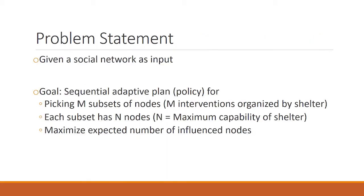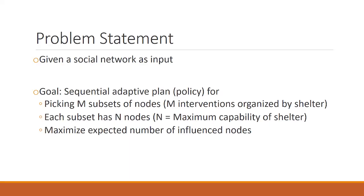Our problem statement is: given a social network as input, our goal is to come up with a sequential adaptive plan or policy for picking M subsets of nodes, where M is the number of interventions the shelter wants to organize. For each intervention, we want to select a subset of N nodes from the social network — N homeless youth to train as peer leaders — picking these peer leaders over all M interventions in a way that maximizes the expected number of influenced nodes in the social network.